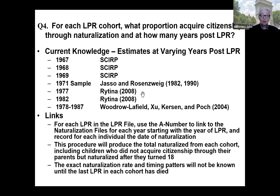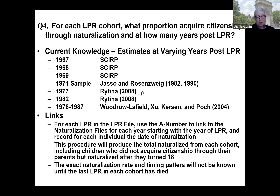Fourth question: For each LPR cohort, what proportion acquire citizenship through naturalization, and how many years post-LPR? Acquiring it through naturalization requires the LPR to be 18 years of age, plus other eligibility requirements. This is a question that has been of very great interest for many years, starting with the Select Commission on Immigration and Refugee Policy back in 1980–1981. There are always some data problems — errors, mispunches — but this provides a blueprint for addressing that question.